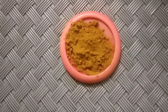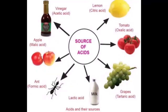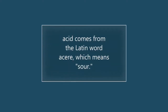First we are going to learn what is an acid. You know curd, lemon juice, orange juice and vinegar taste sour. The substances taste sour because they contain acids. The chemical nature of such substances is acidic. The word acid comes from the Latin word 'acid' which means sour. The acids in these substances are natural acids.